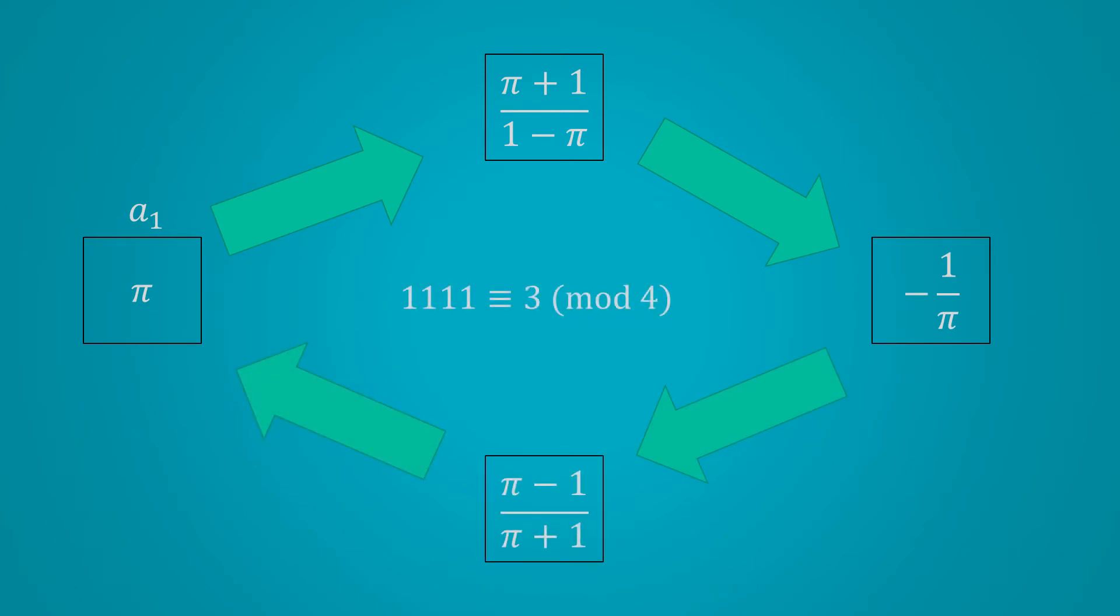Now, dividing 1111 by 4, we get a remainder of 3. And that means that A1111 is the same as A3, which is negative 1 over pi.